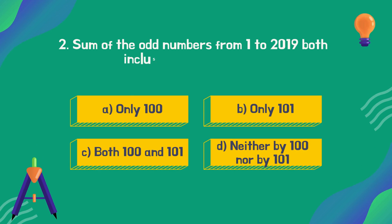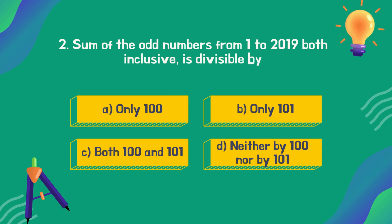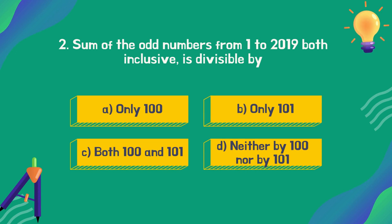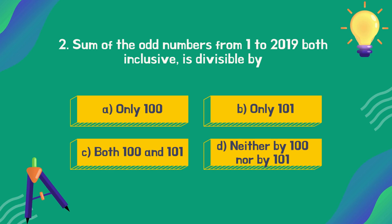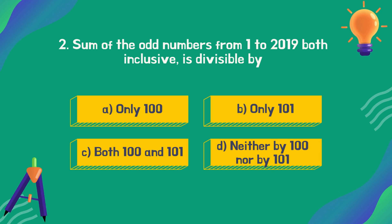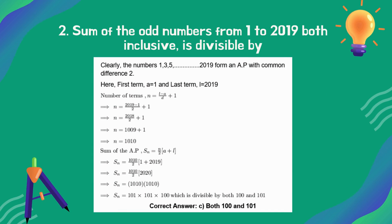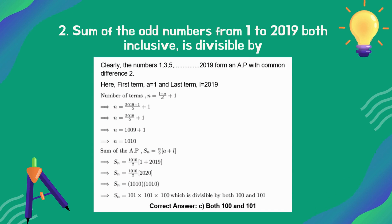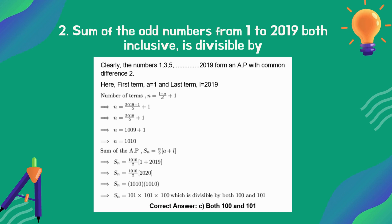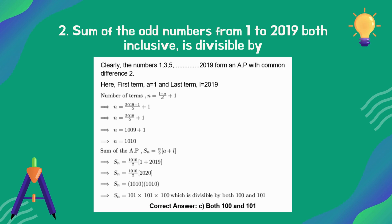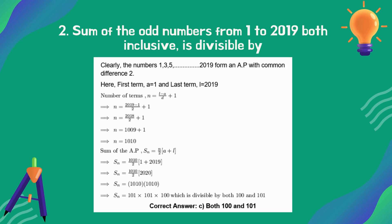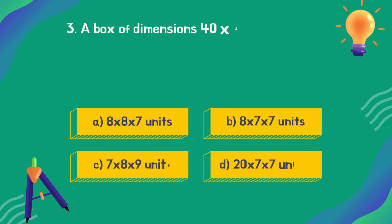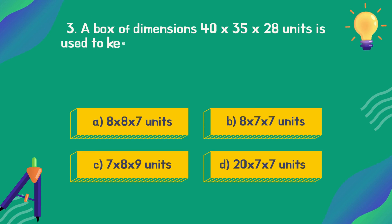The sum of the odd numbers from 1 to 2019, both inclusive, is divisible by which of the following? The correct answer is option B: both 100 and 101.